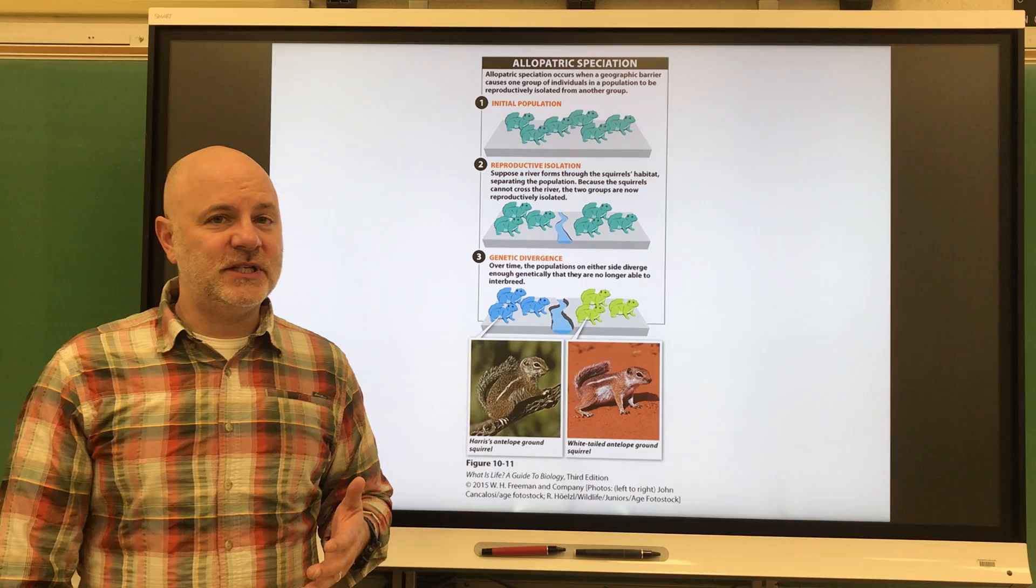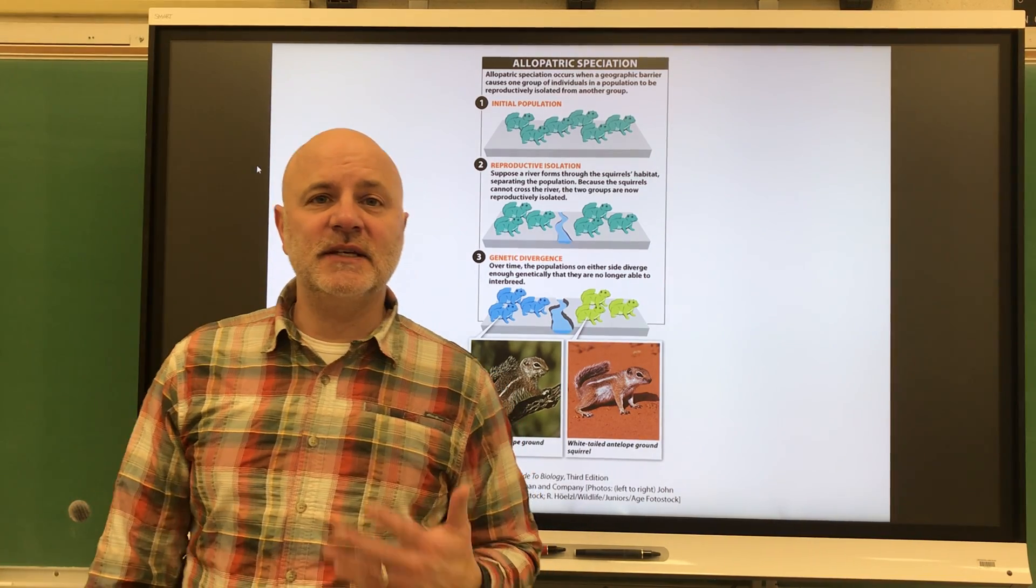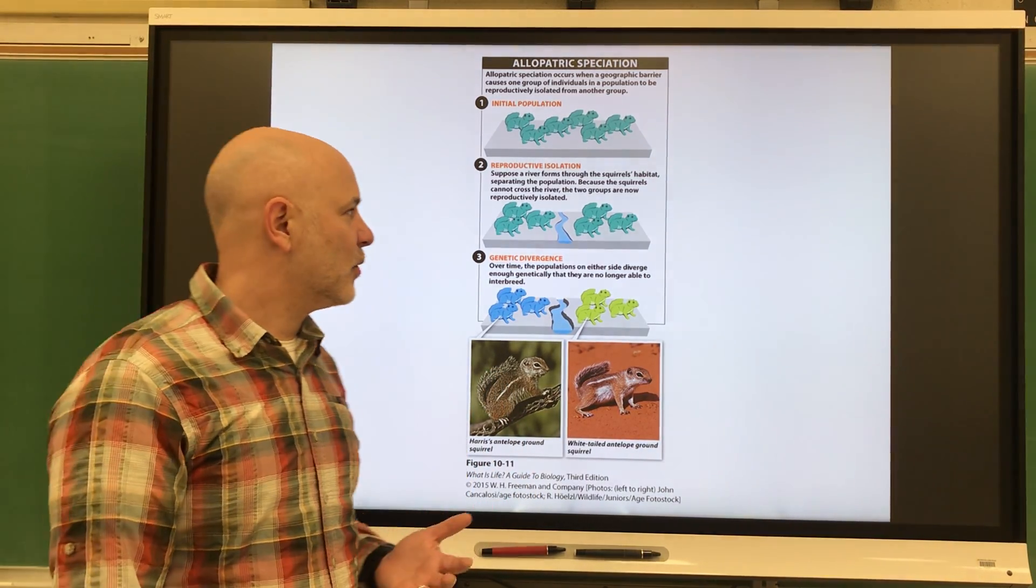Now let's take a look at modes of speciation. Speciation is a splitting of one species into two or more species.